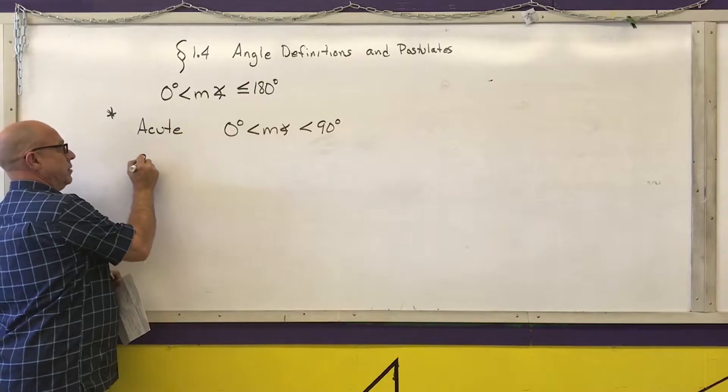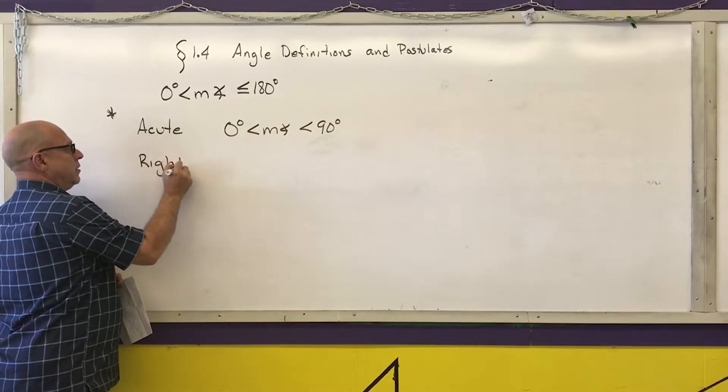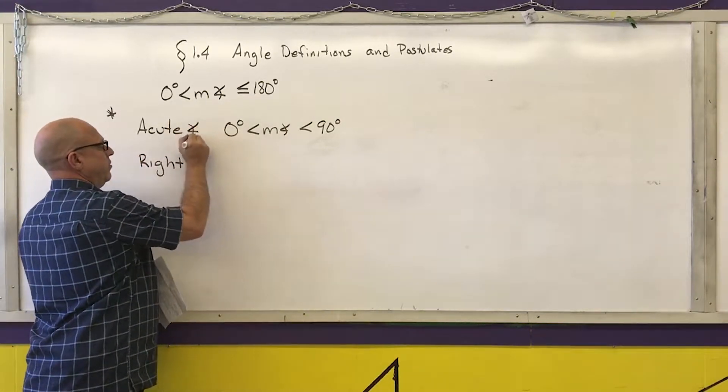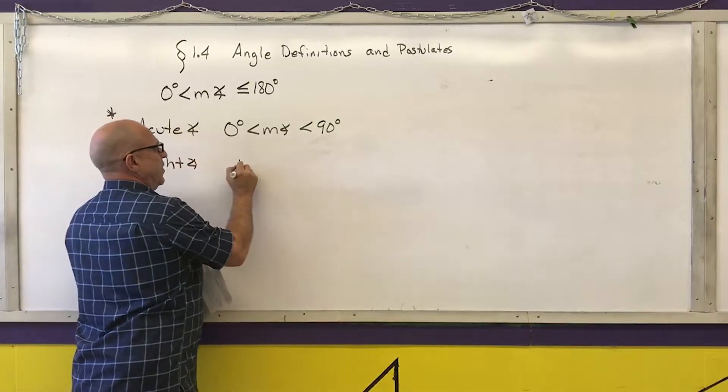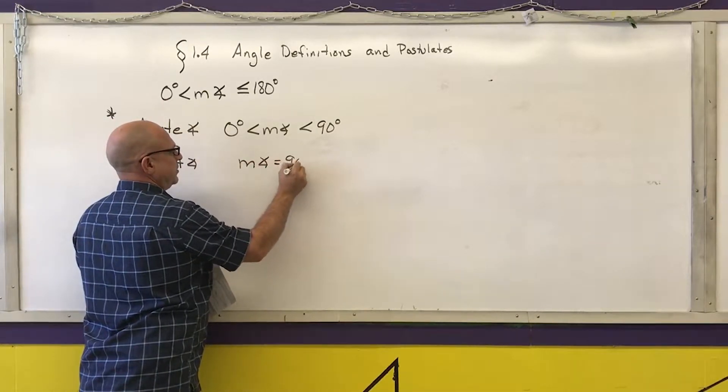A right angle, the measurement of a right angle is equal to 90 degrees.